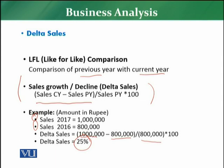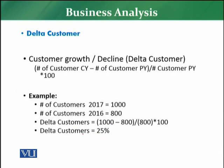If delta sales is positive, it indicates sales growth. If delta sales is negative, it indicates sales decline. This calculation is always expressed as a percentage — showing how much you have grown or declined versus the previous year. Now let's look at another example related to delta customers.